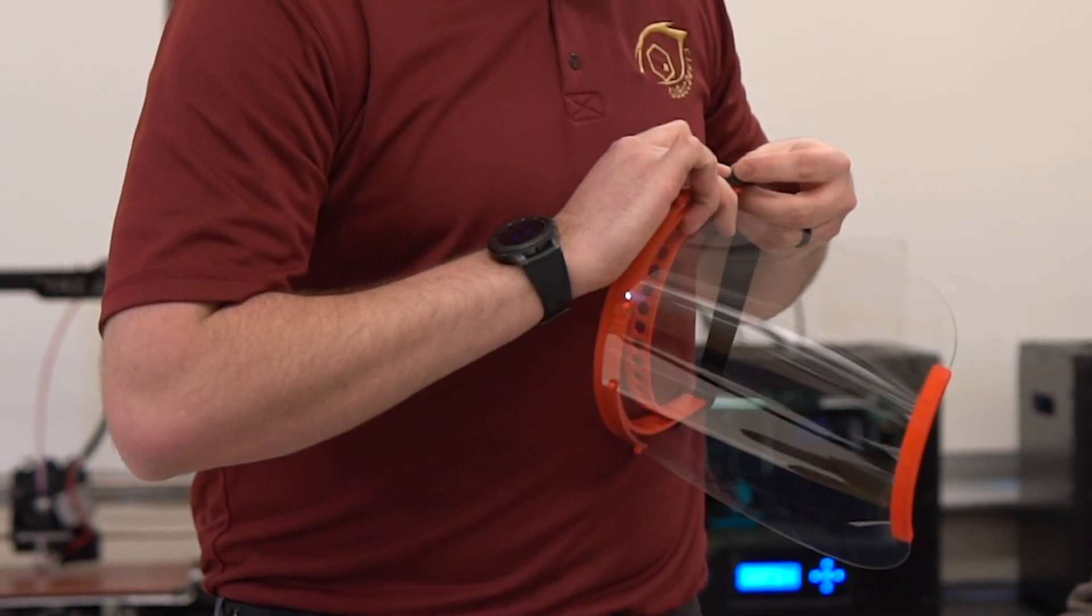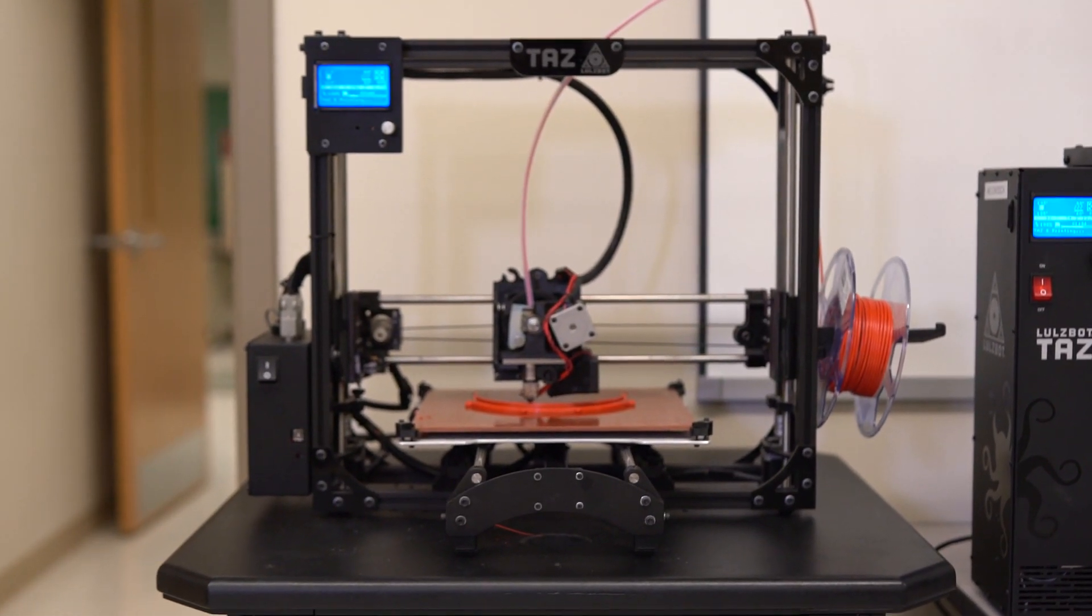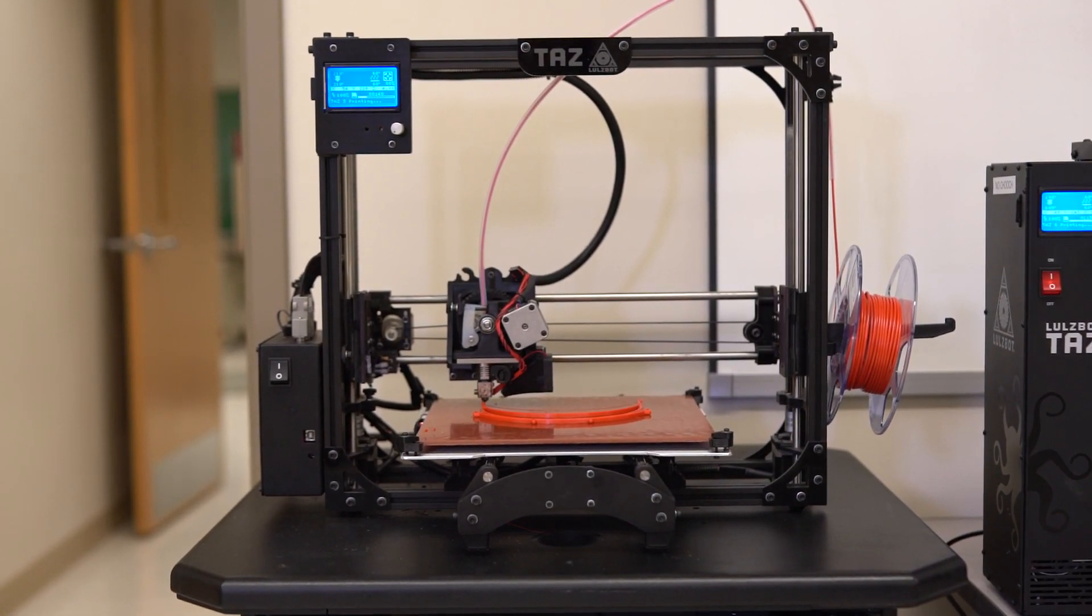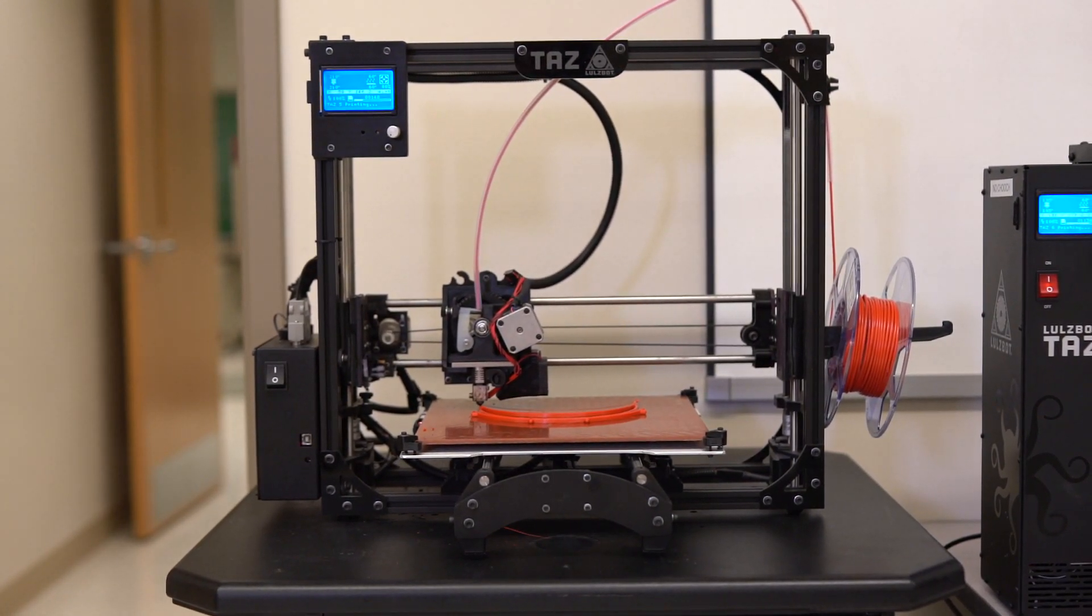Since Gannon has moved to online classes, our labs are closed. So we decided that we had a lot of 3D printers lying around the campus. And there's a movement in the open source community to 3D print and laser cut out face shields for the hospitals to use. So we found some of their designs online.